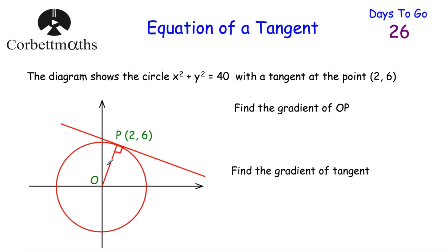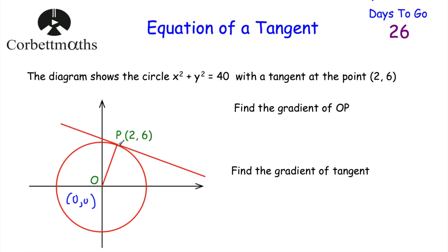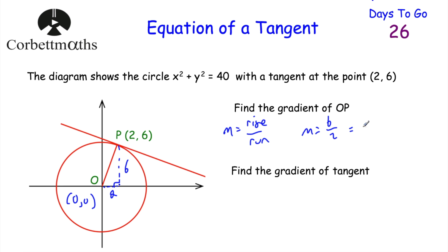Part A says find the gradient of OP. So O is the origin (0, 0). Let's turn it into a right-angle triangle and do rise over run. In terms of the run, we're going from 0 across to 2, so that's a run of 2. In terms of the rise, we're going from 0 up to 6, so the rise is 6. The gradient M equals rise over run, so that's 6 divided by 2, which is 3. So the gradient of the radius is equal to 3.